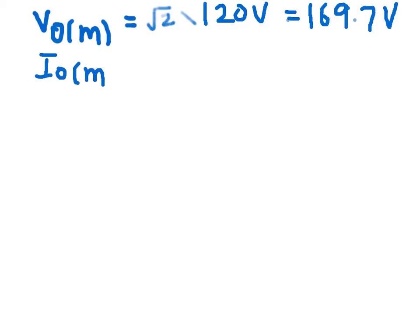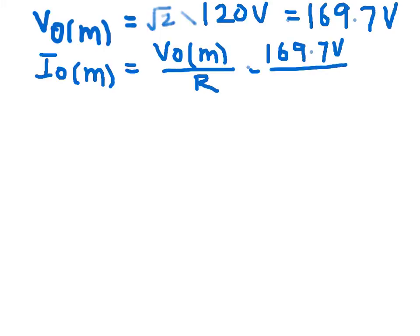If you want to find the peak value of current through the load, you can use Ohm's law and divide the peak value of voltage by the resistance. So the peak value is 169.7 volts divided by 10 ohms, which gives you the current value in amperes.